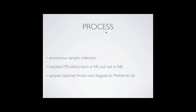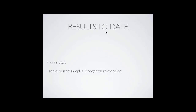Our process was, as in Grey-Bruce, anonymous sample collection. We set out to include all Prince Edward Island infants — those born in PEI with just two centres — but also high-risk babies who were born in Nova Scotia. We had also planned to include babies in New Brunswick but were unable to get ethics approval for the anonymous study to cover those born in Moncton, though those numbers were very small. We collected samples, put them in little vials, froze them, and shipped them to the Mother Risk Lab in Toronto. The sample collection was undertaken from October 2010 to October 2011 and we've just had our first round of results back.